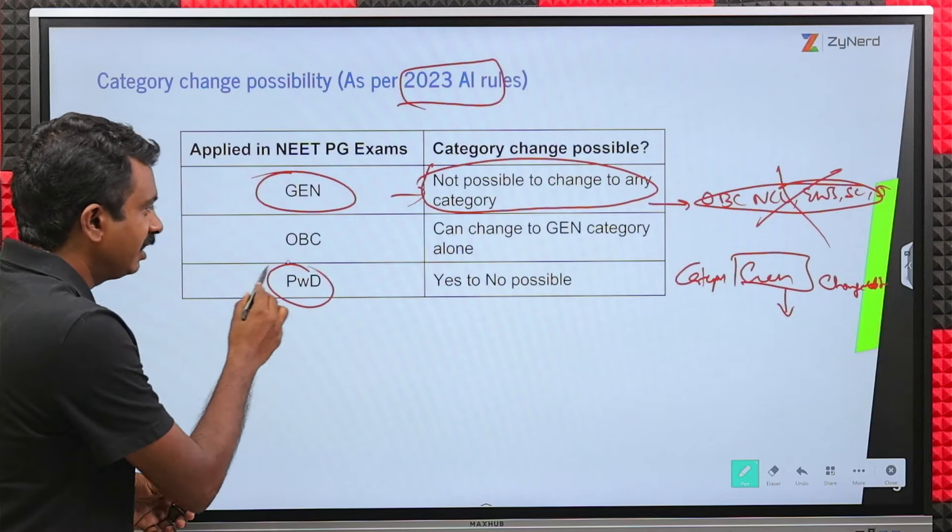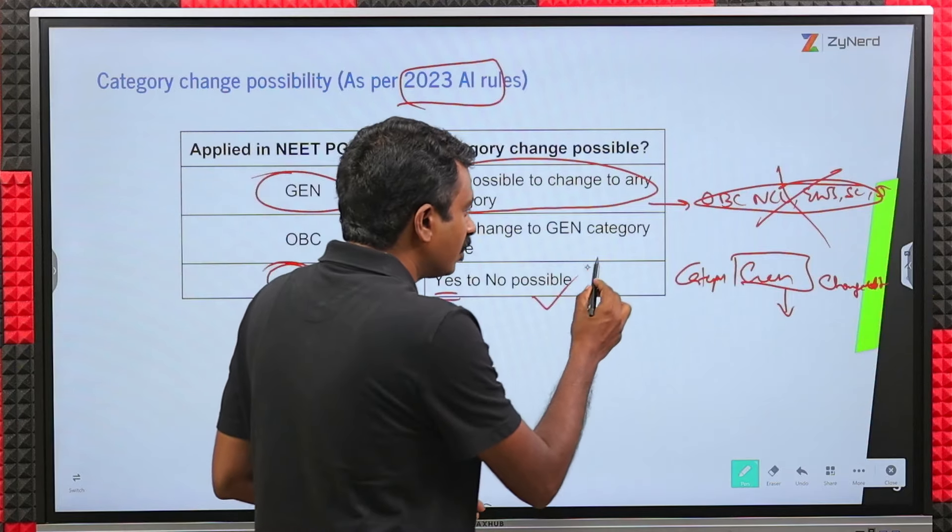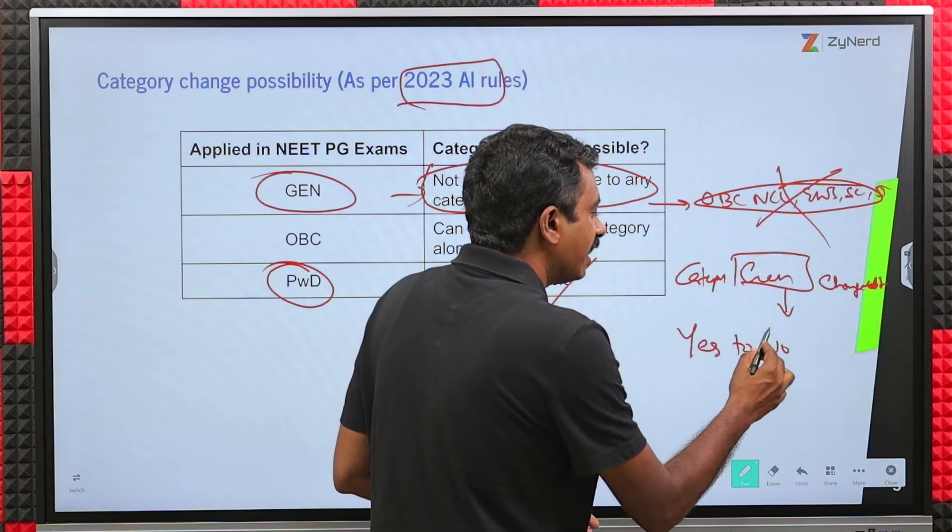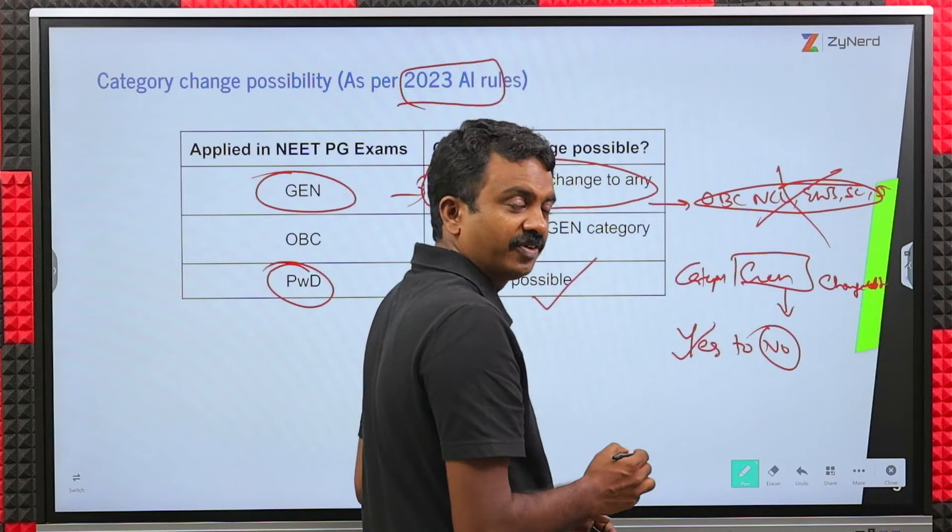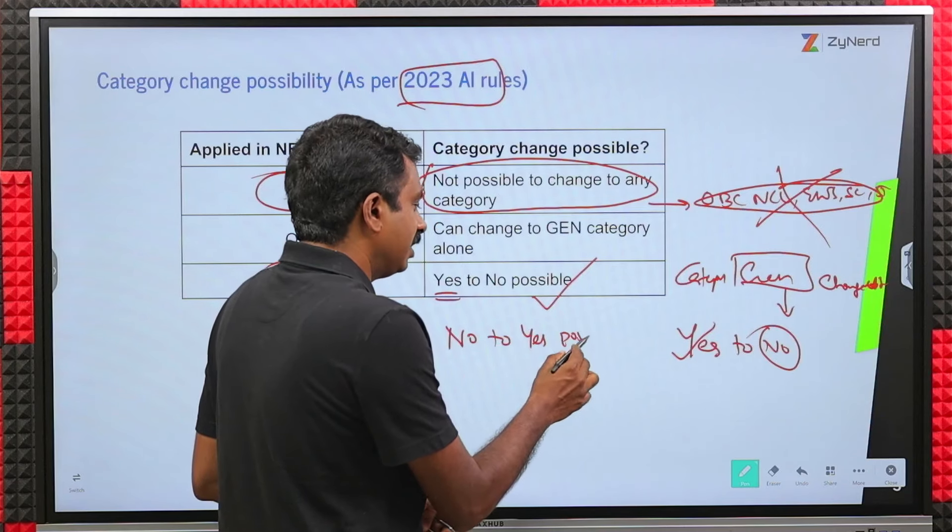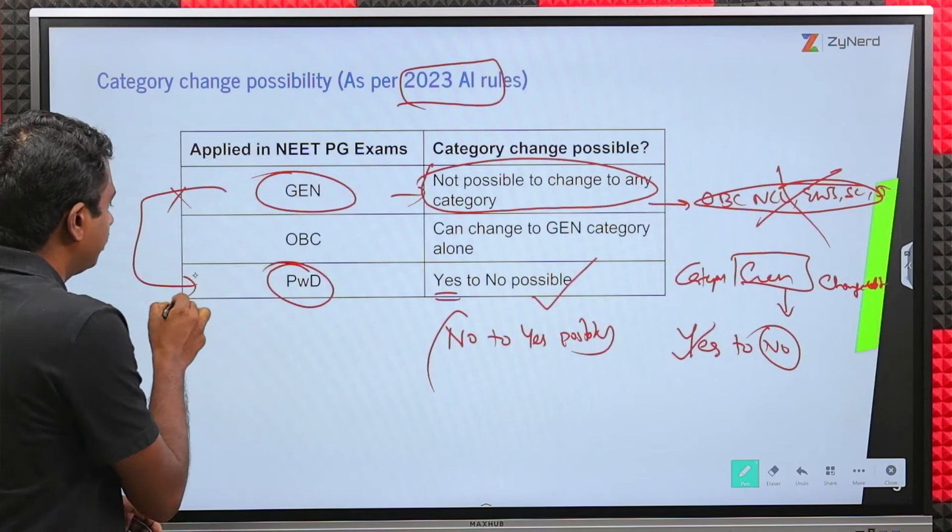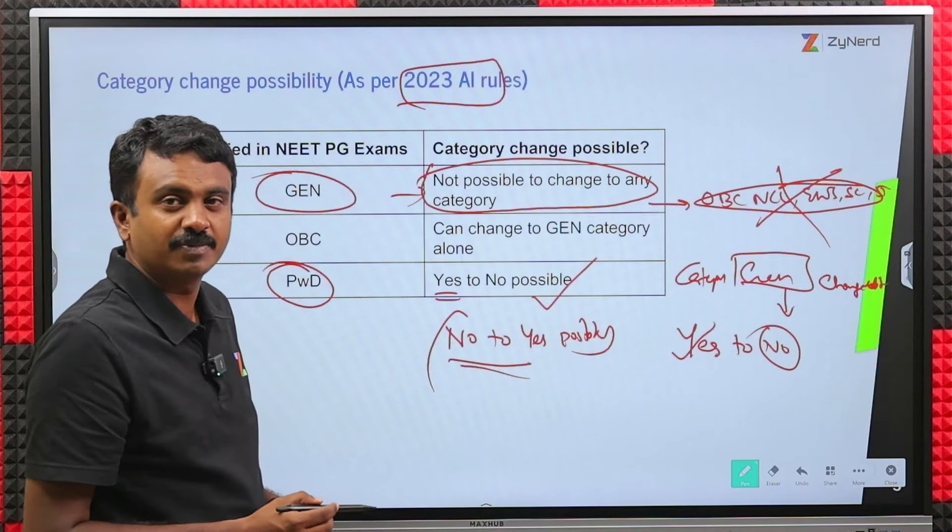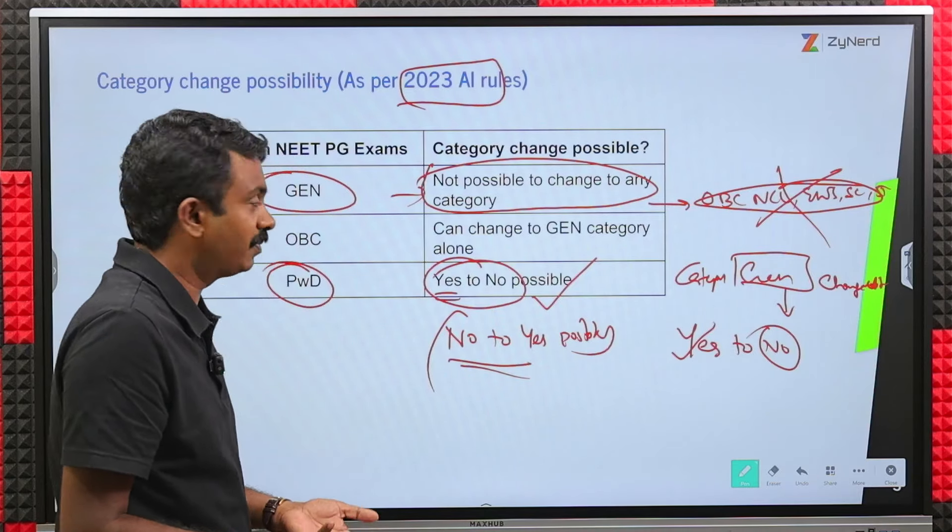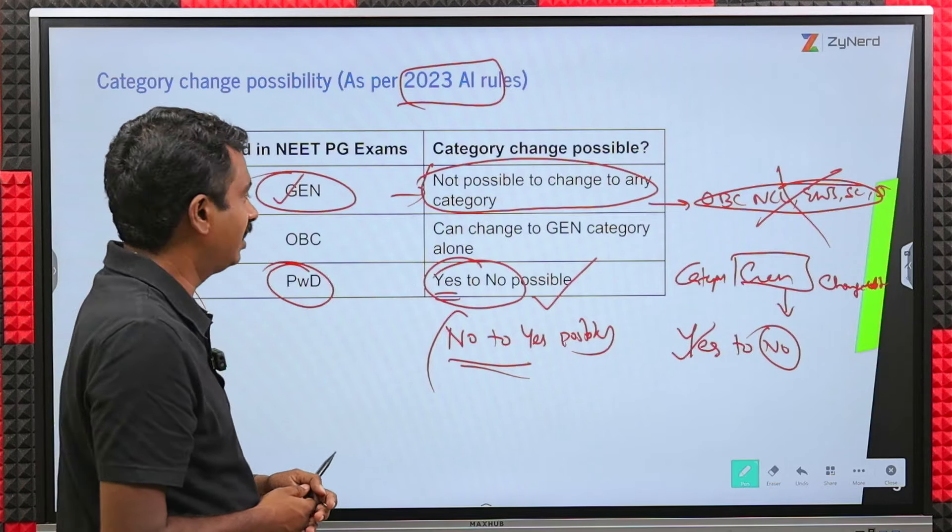Same with PWD. If you applied as yes, then yes to no is possible. So I applied as yes in PWD and I can say no because I did not get the certificate. If I applied as no to yes, it is not possible. This was not possible last year. Will it be possible this year? Will these two be possible this year? Which one? No to yes. Will it be possible this year? We do not know. What is possible is yes to no. PWD yes to no is possible. General to this category is not possible. That we clearly know.